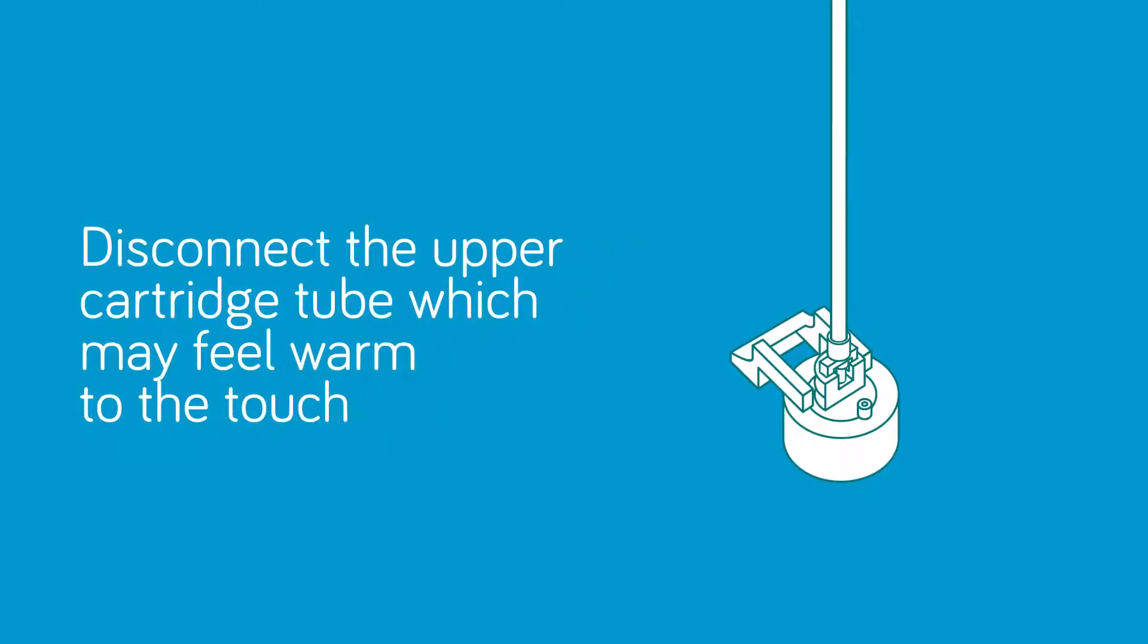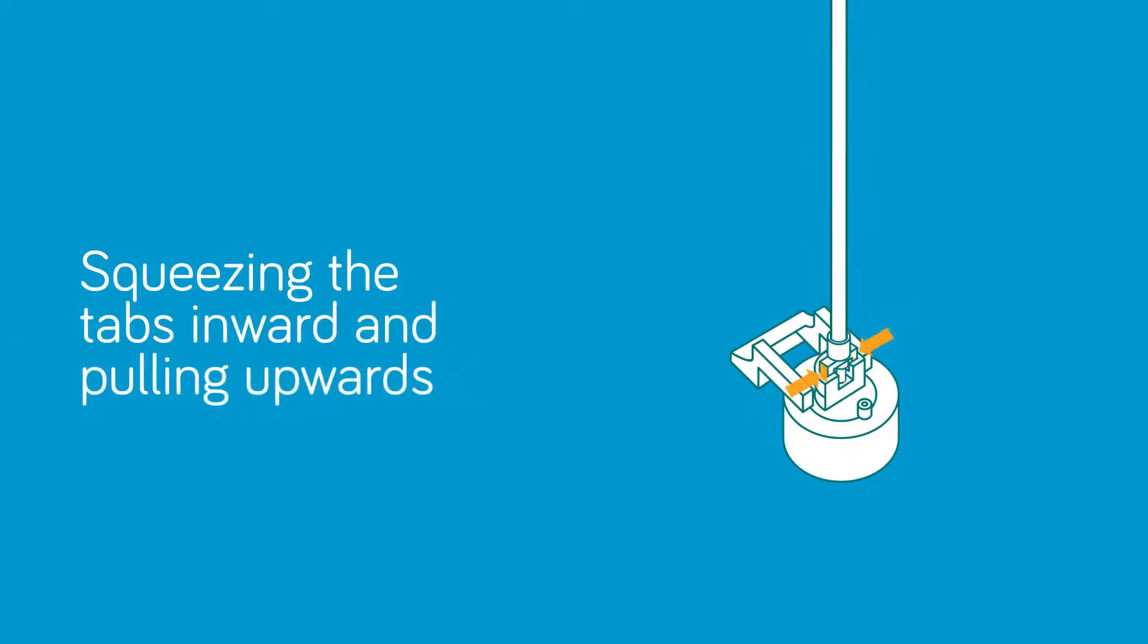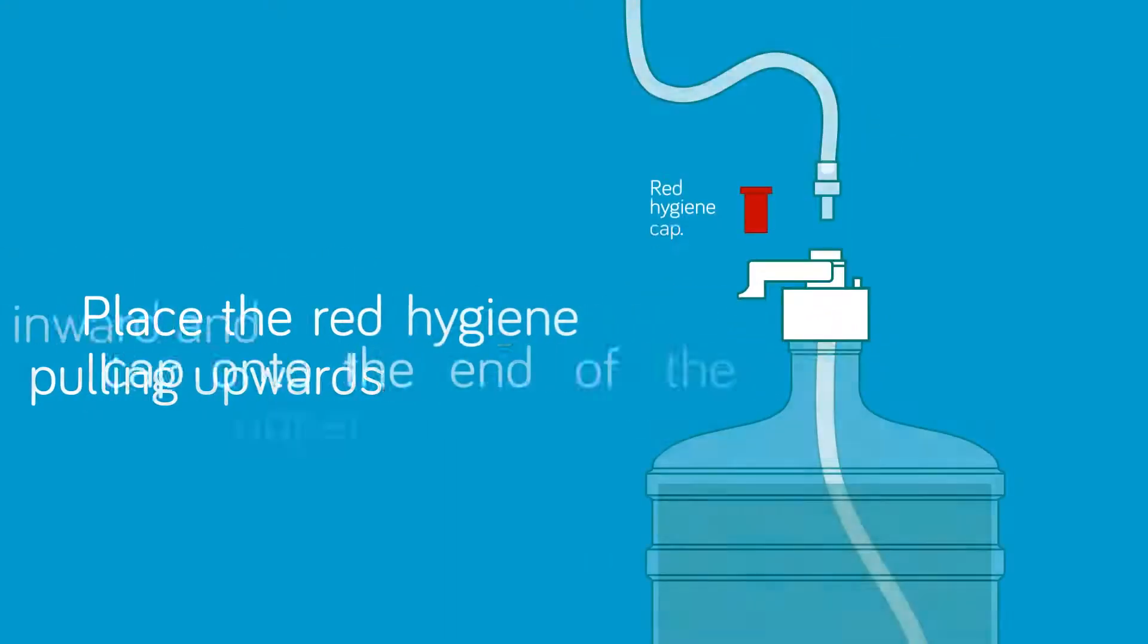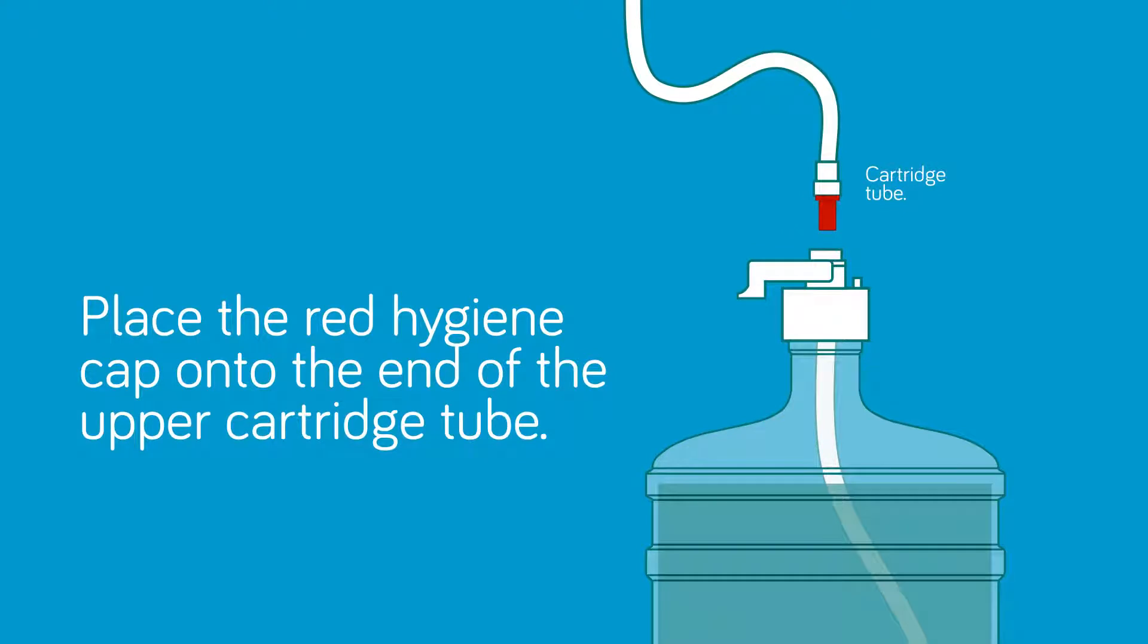Next, disconnect the upper cartridge tube, which may feel warm to the touch, from the lower cartridge cap by squeezing the tabs inward and pulling upwards. Then place the red hygiene cap onto the end of the upper cartridge tube to ensure no water drips.